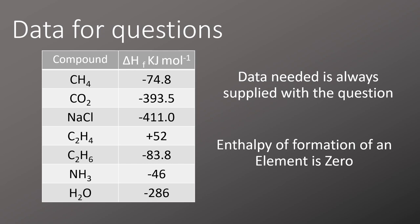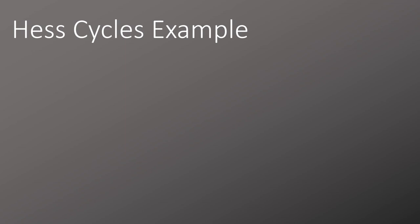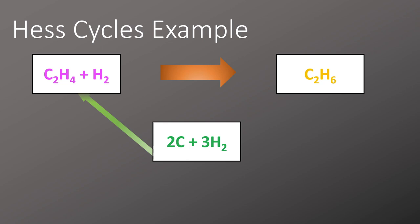We'll look at the example of constructing a simple Hess cycle. We'll write out the equation we're looking at along the top and then we'll add the elements in below. We'll draw arrows to show the enthalpy change of formation reactions taking place and then we'll add in the values for each reaction remembering that the enthalpy change of an element is always zero.